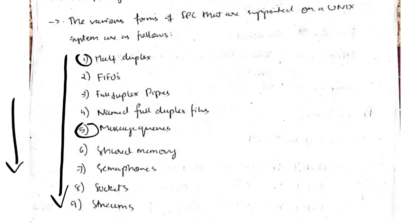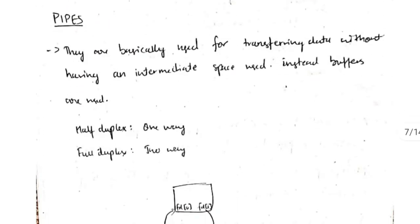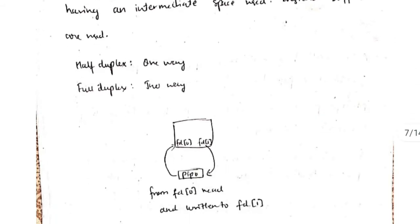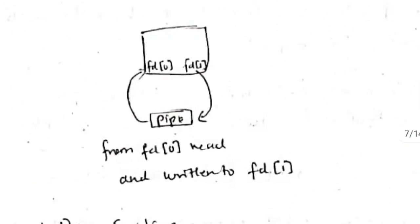Here we have pipes. Pipes are used for transferring the data without using any temporary space like we will be using a buffer here. There are two types: half duplex and full duplex. In half duplex, only from one part to another part of the system it can be transferred. In full duplex, two-way transfer will be there.